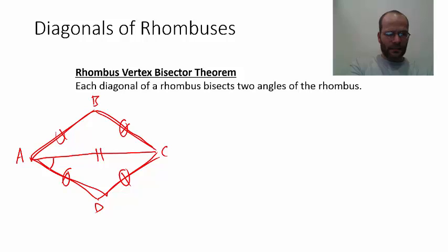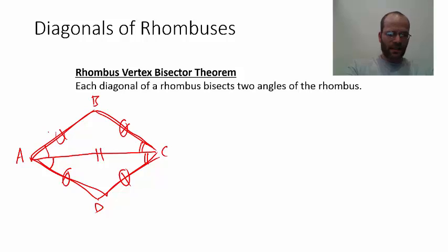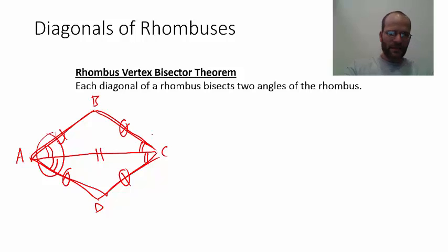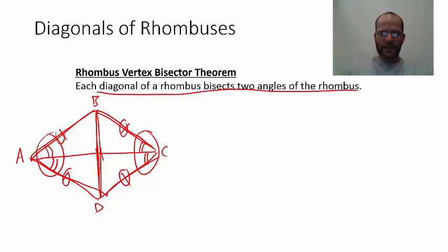Since those two triangles are congruent, this angle is congruent to that angle, and this angle is congruent to that angle. Both triangles are isosceles, so the base angles must be congruent, meaning angle BAC is congruent to angle BCA. Therefore vertex A is bisected and vertex C is bisected. If we drew in the other diagonal BD and ran the same analysis, we'd find it bisects vertex B and vertex D. So each diagonal of a rhombus bisects two angles.